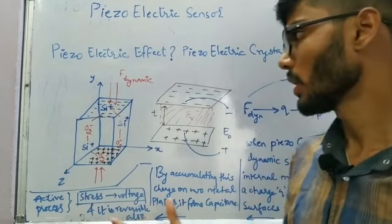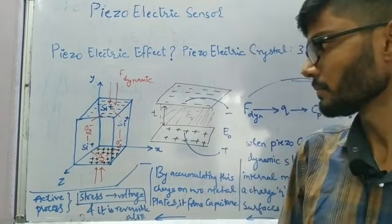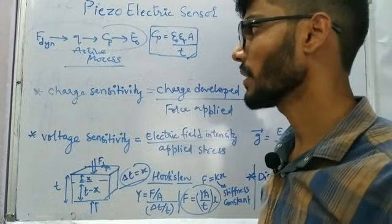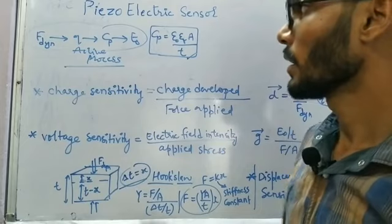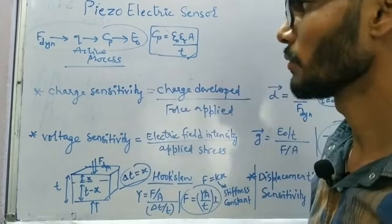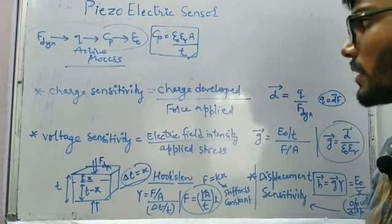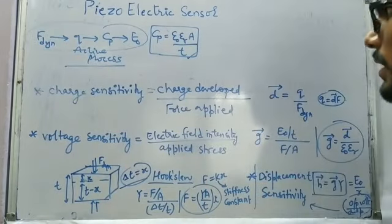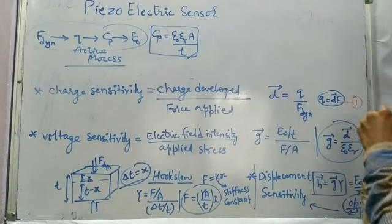Now we will write a few formulas and then proceed to the electrical equivalent circuit. The first formula is charge sensitivity: D = Q / F_dynamic, i.e., charge developed divided by force applied. This gives us Q = D × F.